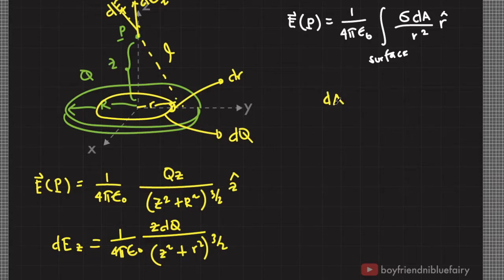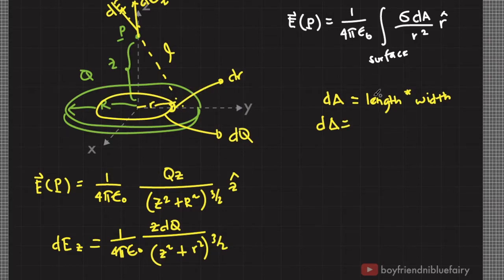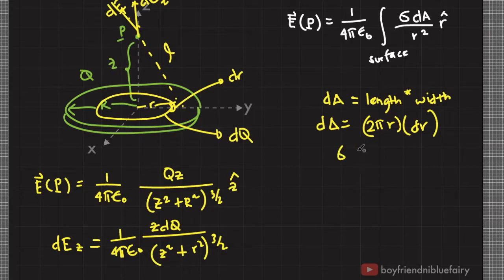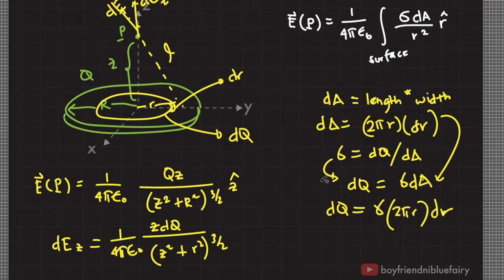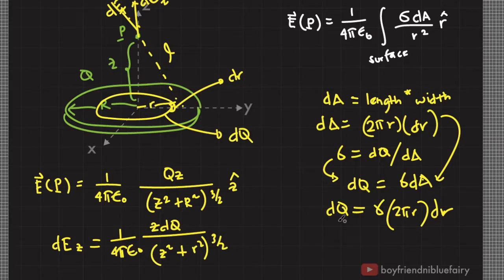The ring's infinitesimal area dA equals length times width. From the figure, the length of the ring is 2πr and its width or thickness is dr, so dA = 2πr dr. Since surface charge density sigma equals dq over dA, we have dq = sigma · dA = sigma · 2πr dr. We plug this expression for dq into our dE_z formula so that we can integrate in terms of the variable small r.